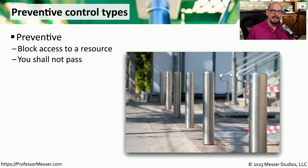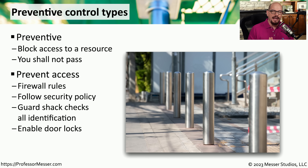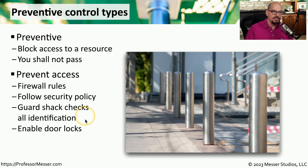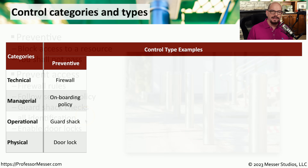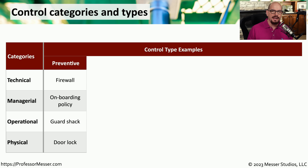The first control type we'll look at is a preventive control type. This is a control type that limits someone's access to a particular resource. You can think of this as something like a firewall rule, which would prevent somebody from gaining access to a particular area of your network. Or it may be something more tangible, such as a guard shack checking everyone's identification as they come into your facility. A good way to test yourself with these different control types is to determine what category a certain type will fit into.